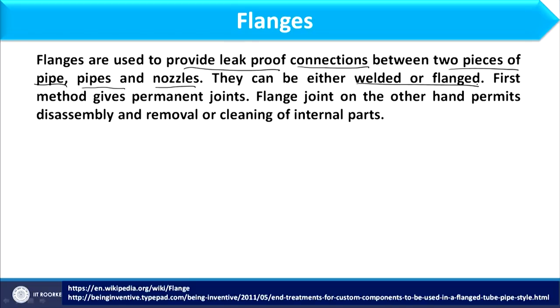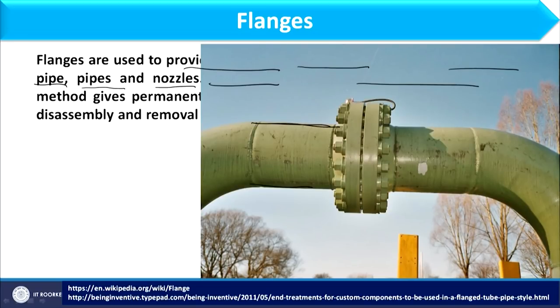Pipe sections or pipe and nozzle connections can be either welded or flanged. Welding gives a permanent joint when two pipes of the same diameter are joined. However, when using a flange — which provides a leak-proof connection — that connection can also be separated. So flanges are used when maintenance or repair is required. Looking at this image, you can see two pipe sections of the same diameter, and this connection is basically called a flange.